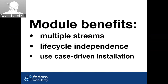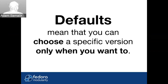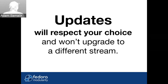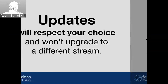There is also something called use case installation, which I'll show in a bit. There are two other important mechanisms in modularity. One is defaults — you can choose a specific version only when you want to. This is important if you don't want to care about all available versions; you just install a package as you're used to. You basically get that thanks to defaults, because there will always be one that is the default. If you actually choose a specific version, updates will respect your choice and won't upgrade you to a different stream.